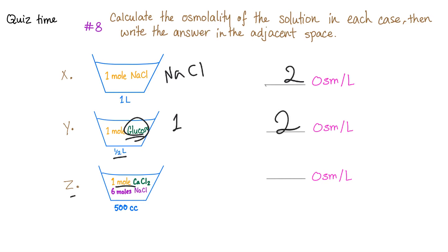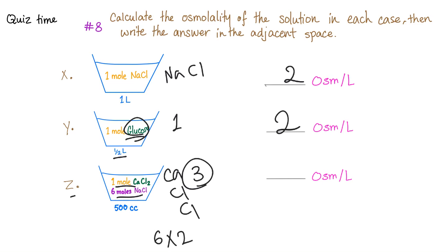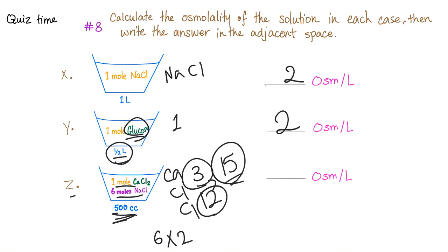Here you have one mole of calcium chloride. It gives you calcium and two chloride ions — so three osmols. And six moles of sodium chloride: six times two gives you 12. 12 plus 3 equals 15. But we have 500 cc, which equals half a liter, so the correct answer here is 15 times two, which is 30.